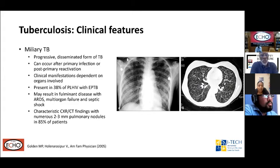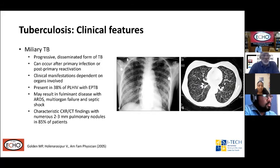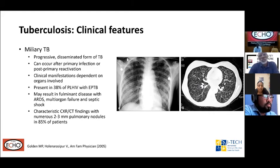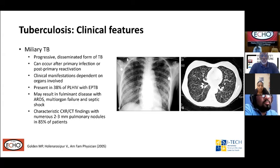Miliary TB is a progressive disseminated form of TB resulting from hematogenous dissemination, either during the primary phase of TB acquisition or later during reactivation. Clinical manifestations depend on which organs are involved. It is present in over one-third of persons with extra-pulmonary TB. It can result in fulminant disease with an ARDS-type picture, multi-organ failure, and septic shock. The classic x-ray finding — for which miliary TB gets its name — is fine two-to-three millimeter nodular opacities mimicking a millet seed, seen in 85% of patients with miliary TB.